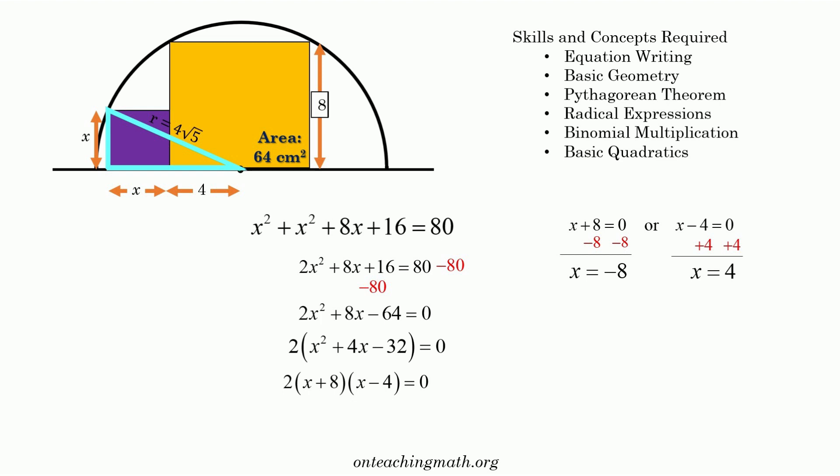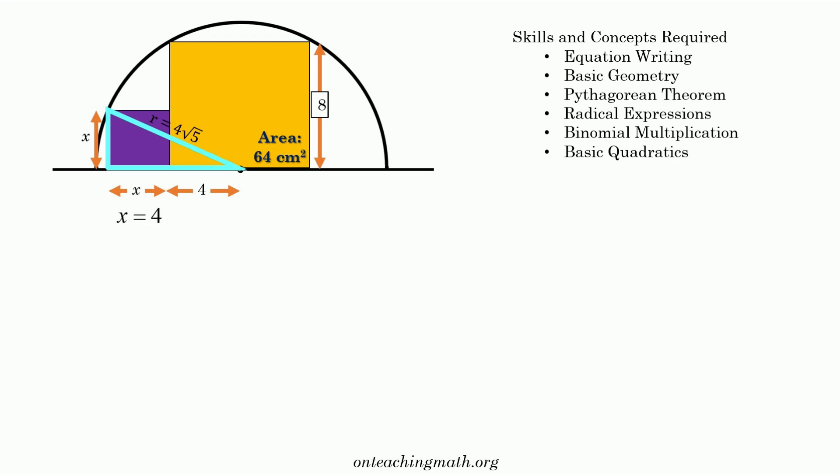Well, x is a distance, so it can't be negative. x is a positive number, so x is equal to 4. Since x is equal to 4, the side of the purple square is 4, which makes its area 4 times 4, which is 16. Pretty cool problem.